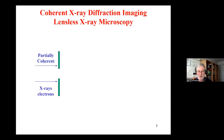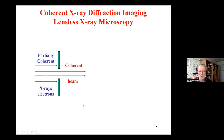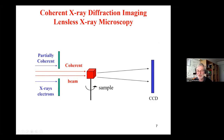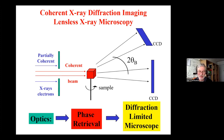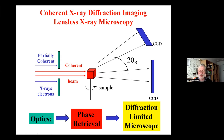In coherent diffraction imaging, we start from partially coherent X-rays or electrons. We pass through slits that define our coherent beam, then put our sample, and measure either in the forward direction or in the Bragg direction depending on the experiment. We substitute optics between the sample and CCD with phase retrieval, and hope to get to the diffraction-limited microscope.